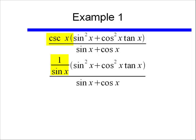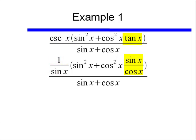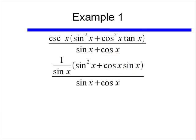So my cosecant of x becomes 1 over sine x, and my tangent x becomes sine x over cosine x. That was a reciprocal identity, and a ratio identity. Now, it looks like I can reduce a cosine out of the term cosine squared x times sine x over cosine x. If I do that, I have 1 over sine x times the quantity sine squared x, plus cosine x sine x.